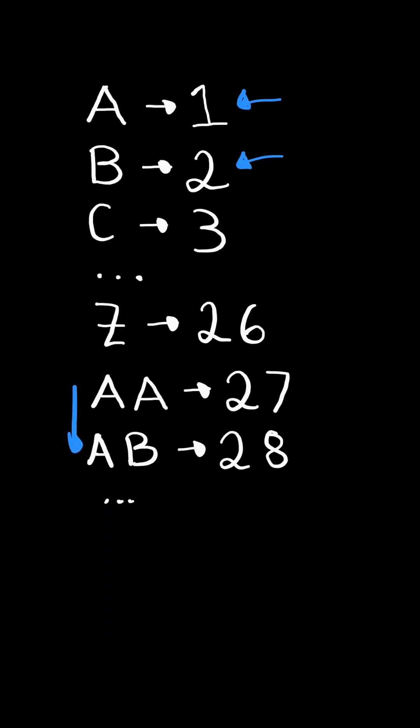Notice once we pass Z, the pattern changes. We are given the column title. Return its corresponding column number.